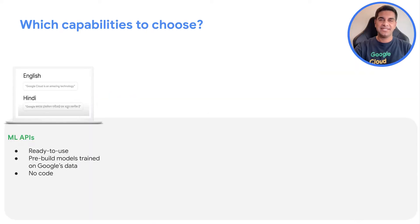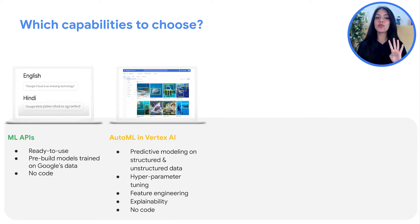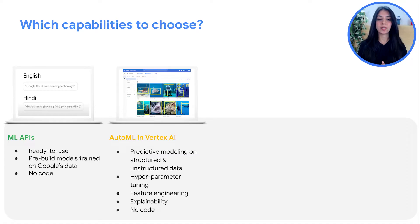Starting with ML APIs that you learned about in the previous video — here you get started very quickly with minimal effort and no customizability. If you need a little more customization and are ready to put in some time and effort, we have Vertex AI with AutoML. This works for four types of data: text, tabular, images, or videos.